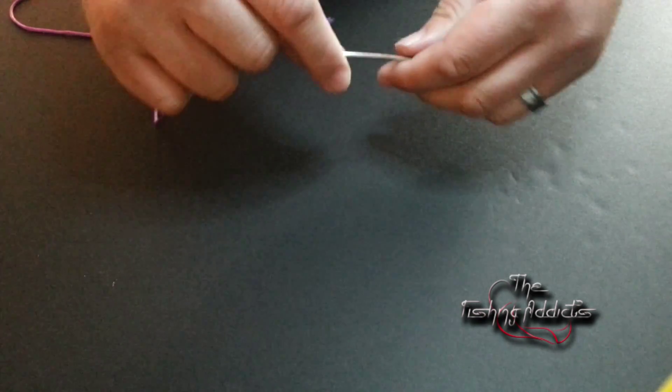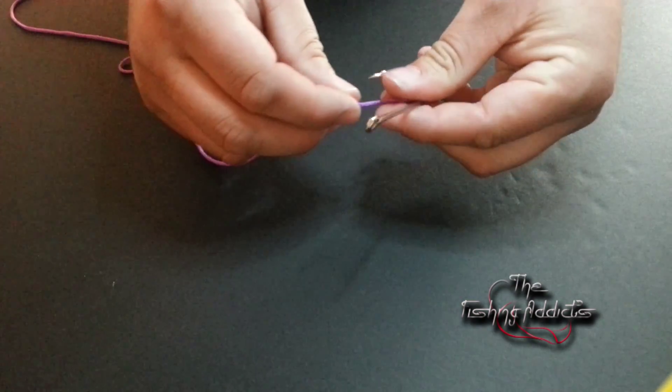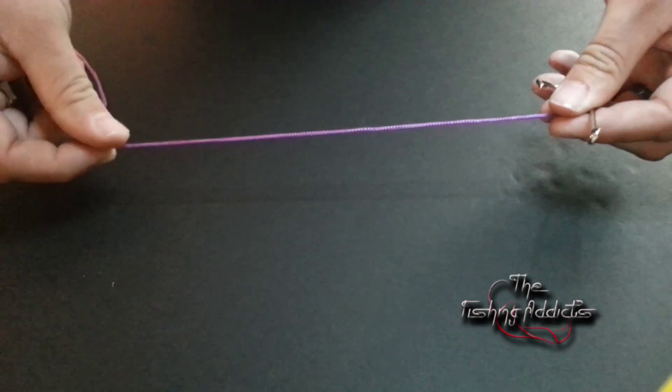Hello again fishing addicts, welcome to another tutorial. Today I'm going to show you how to do a tucked blood knot. Take your hook and fishing line. As always, I'm just using a bit of cord so it shows up nicely on the camera.